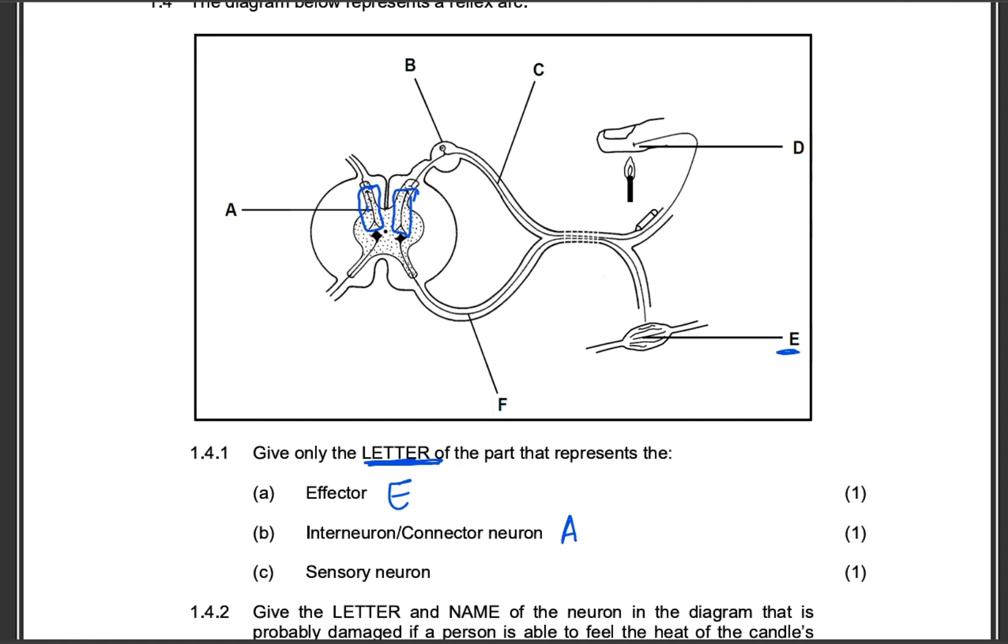Then the letter for the sensory neuron, that will be letter C. So sensory neuron impulses transmitted from the receptors. Remember, this becomes a receptor. Then this becomes an effector. So from the receptor to the central nervous system, that's the sensory neuron, letter C.